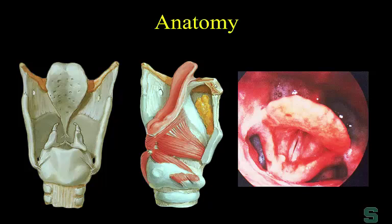If you can understand the laryngeal and bony framework of the larynx, everything else falls into place. For example: there's the hyoid bone, and there's the epiglottis. If you have a ligament that goes from the hyoid bone to the epiglottis, it's called the hyoepiglottic ligament — purely based on anatomy. That's a multisyllabic term that makes perfect sense once you know those two structures.